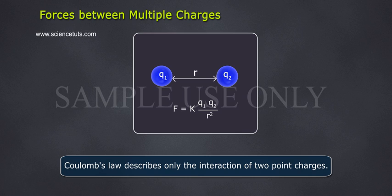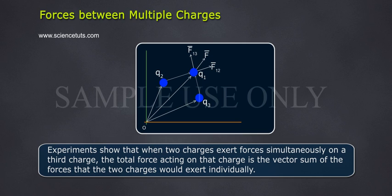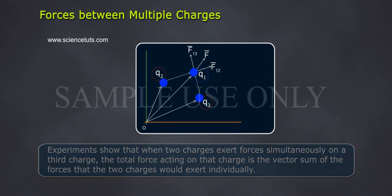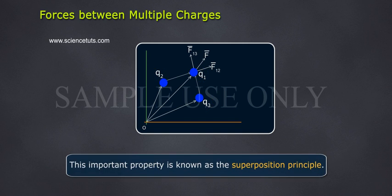Coulomb's law describes only the interaction of two point charges. Experiments show that when two charges exert forces simultaneously on a third charge, the total force acting on that charge is the vector sum of the forces that the two charges would exert individually. This important property is known as the Superposition Principle.